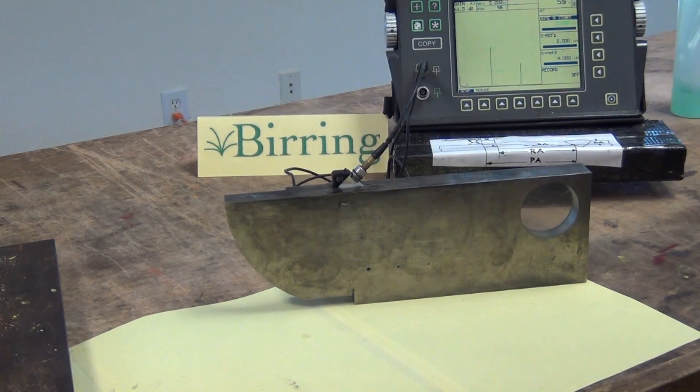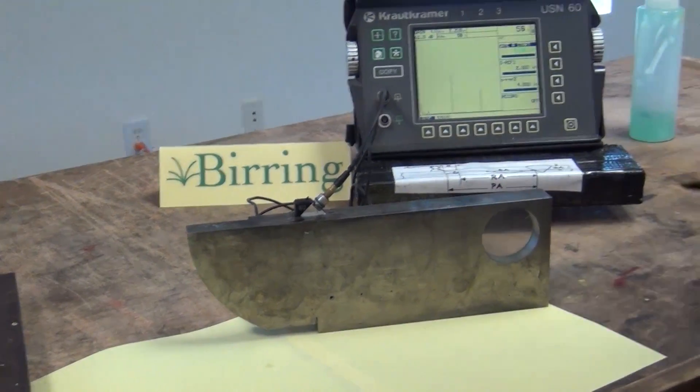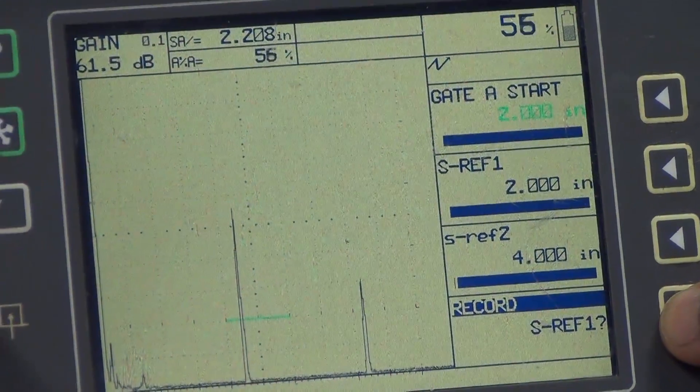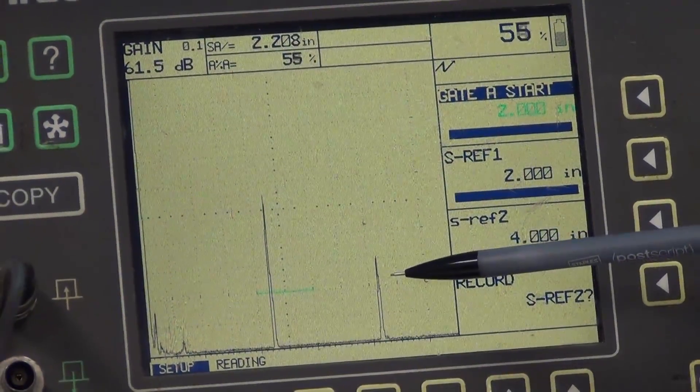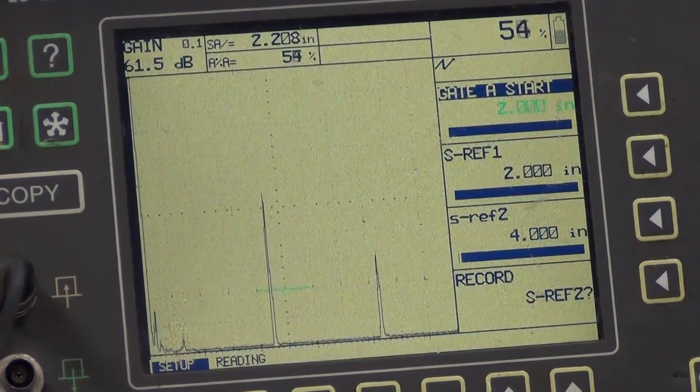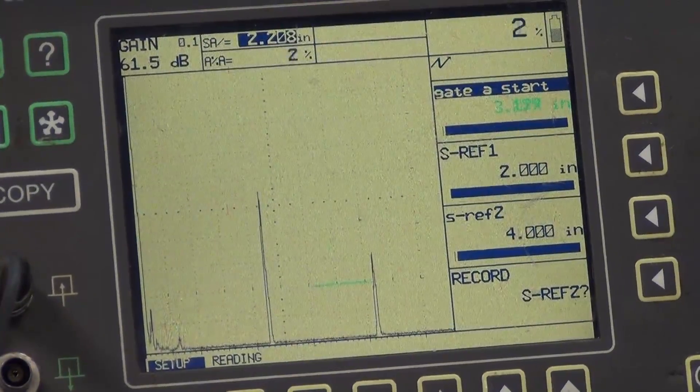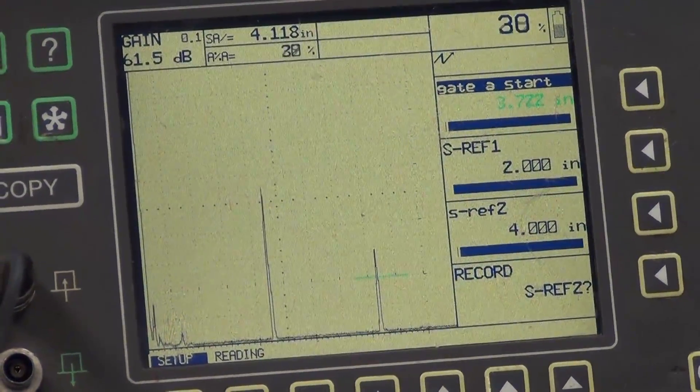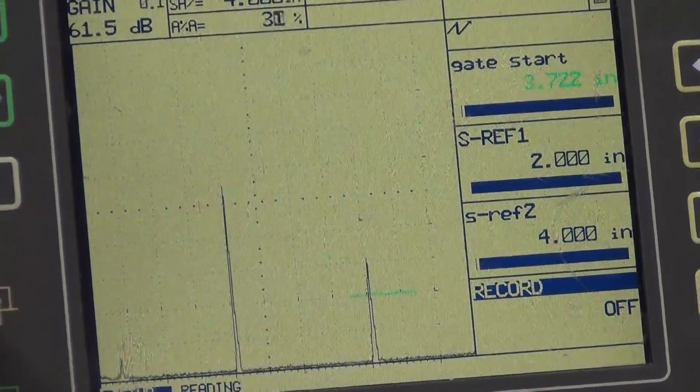So I will record one at a time. Let's start with S reference 1 which is right here. And let's record it. And then I will move the gate to S reference 2 which is right here. And I will select it. The calibration is done.